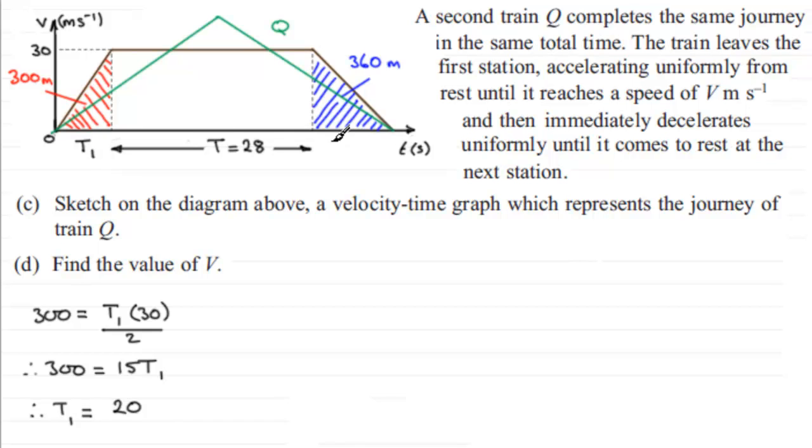Now we need to simply go on and try and work out what this time period is. So suppose I call that time period T3. Then, if we do much the same kind of thing again, let's just come down here. What we've got is that the area of this triangle, 360, equals the base, T3, times the height, height being 30, and divided by 2. Again, area of a triangle, half base times height.